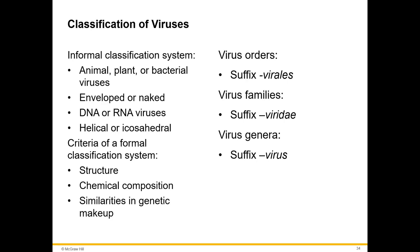An informal classification system classifies viruses on whether they infect animal, plant, or bacterial cells, whether they're enveloped or naked, whether they have DNA or RNA as their genetic makeup, and whether they're helical or icosahedral. A formal classification system is dependent on the virus's structure, chemical composition, and the similarities in genetic makeup.